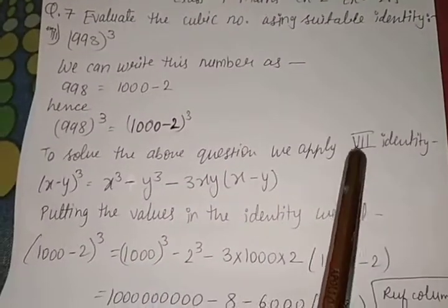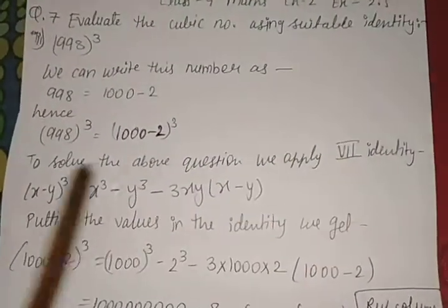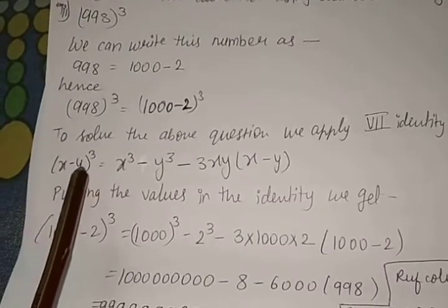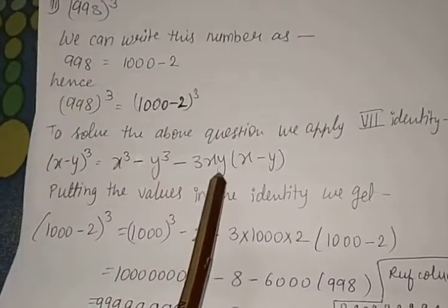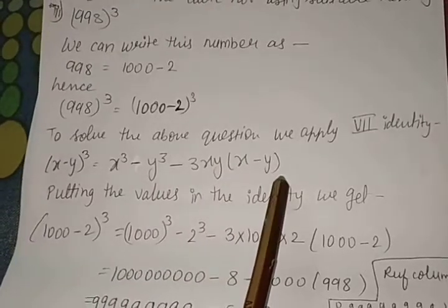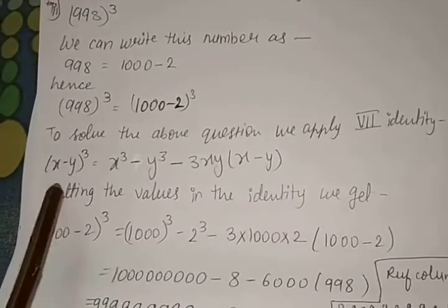To solve this question, we just apply the 7th identity. The 7th identity is (x-y)³ = x³ - y³ - 3xy(x-y). On comparing this identity with the given question...